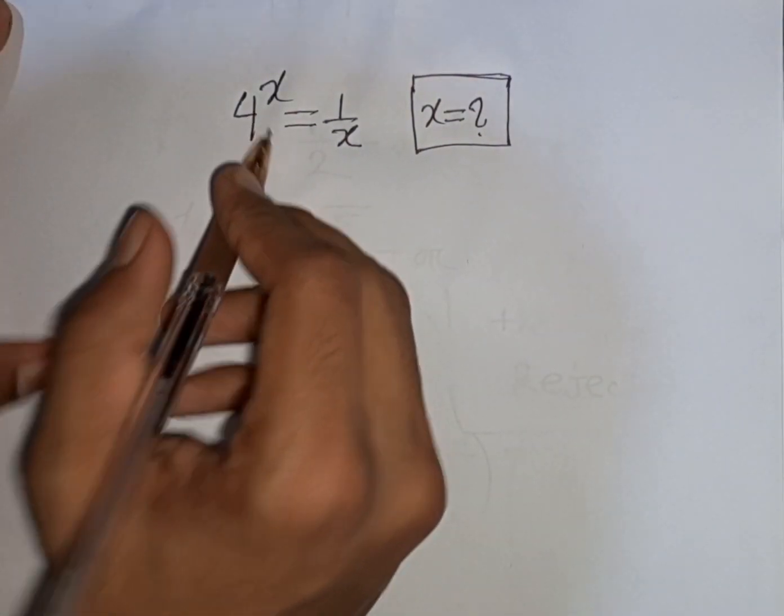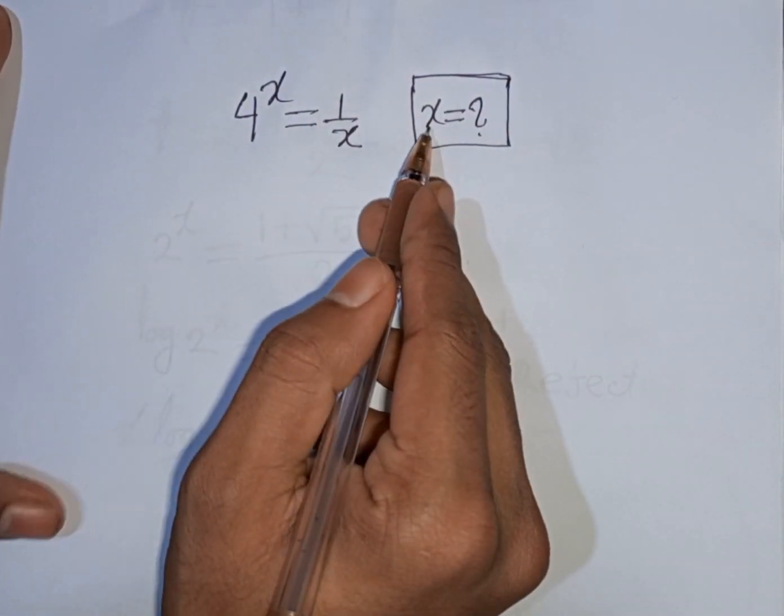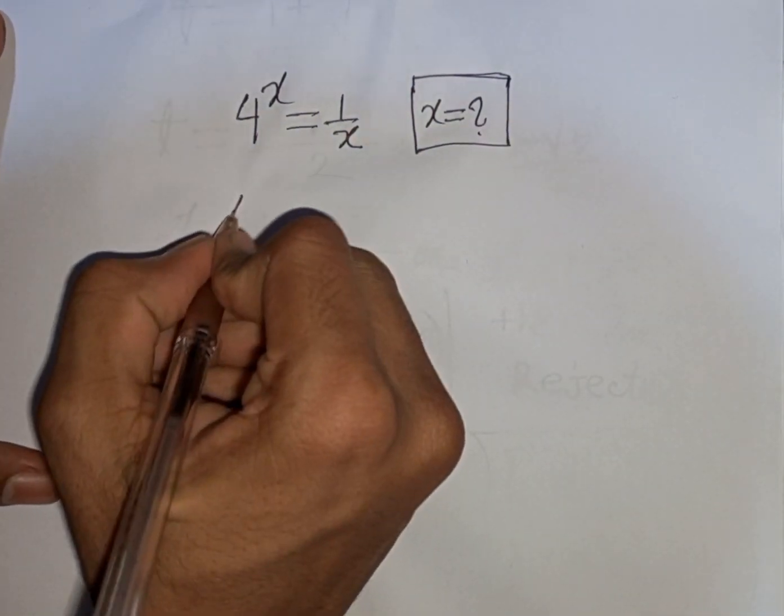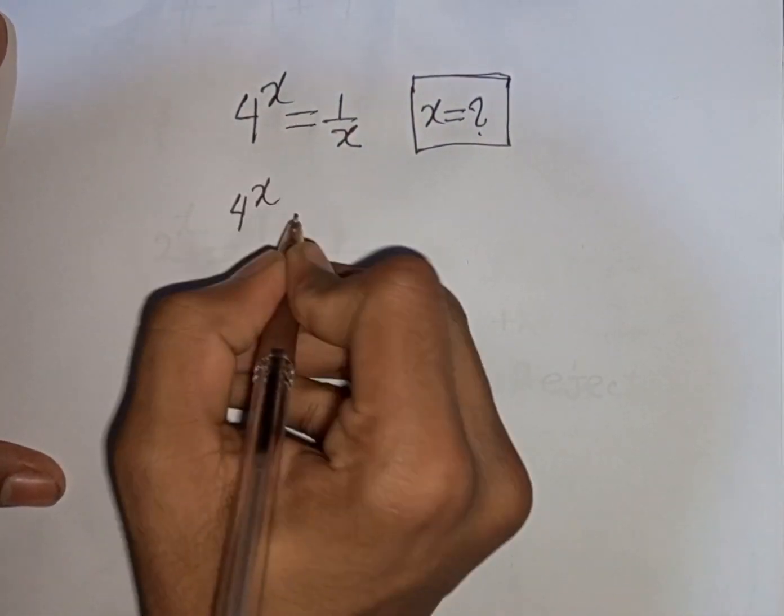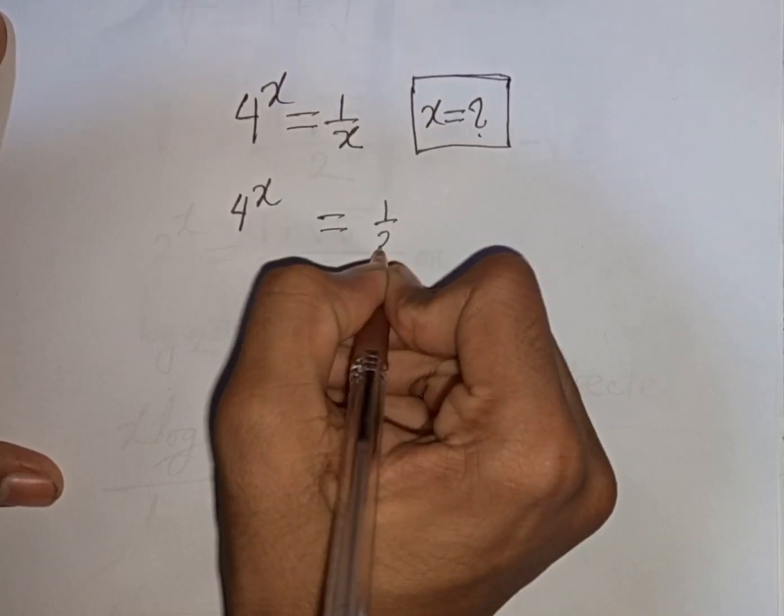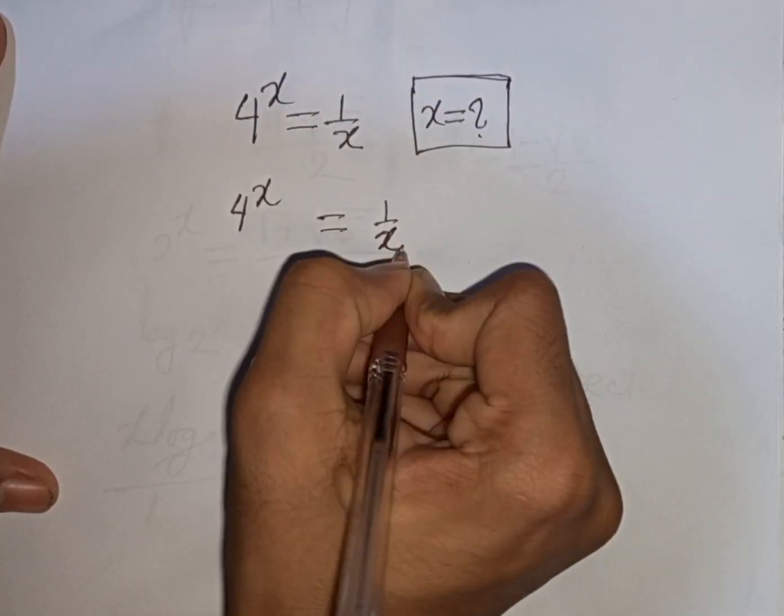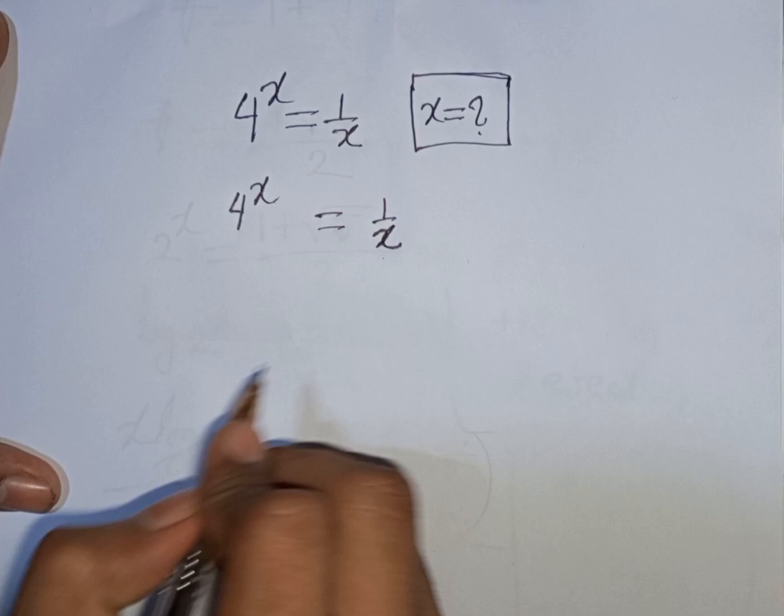How to solve 4^x = 1/x, find the value of x. So we have 4^x = 1/x. Now we multiply by power of 1/x in both sides.